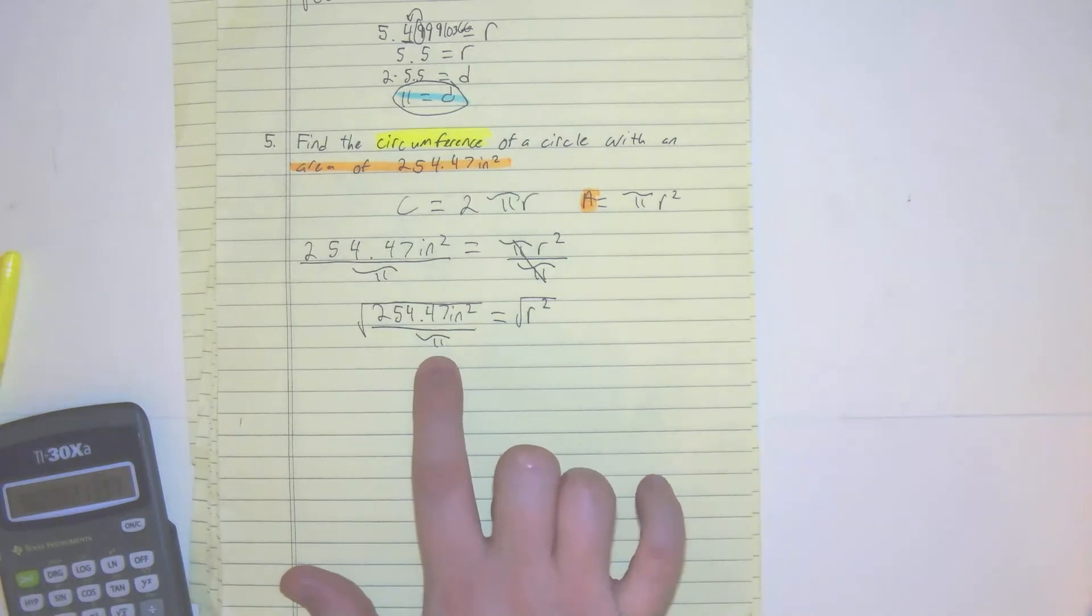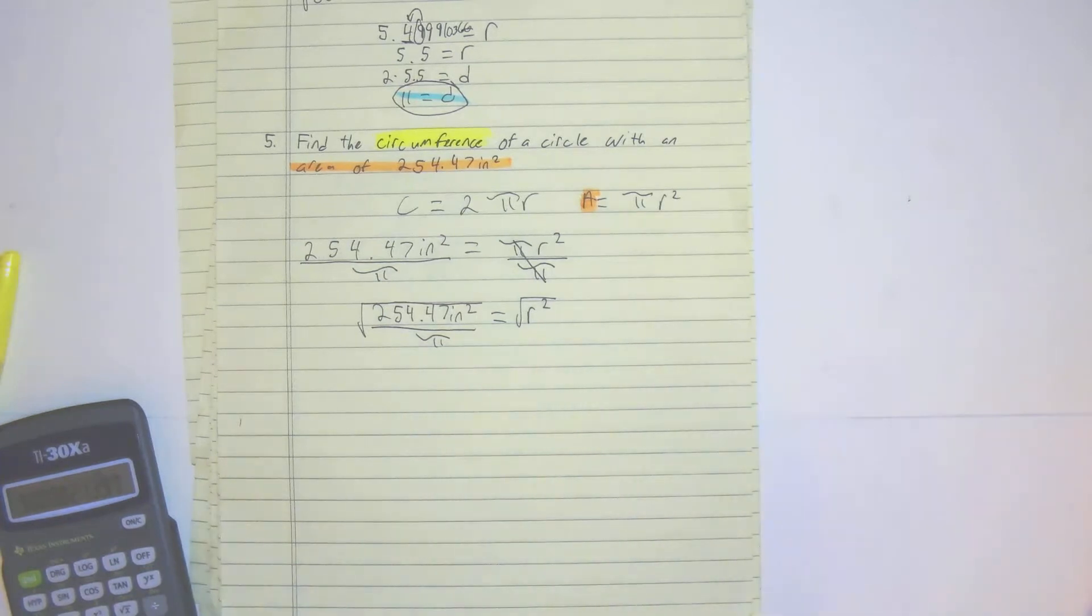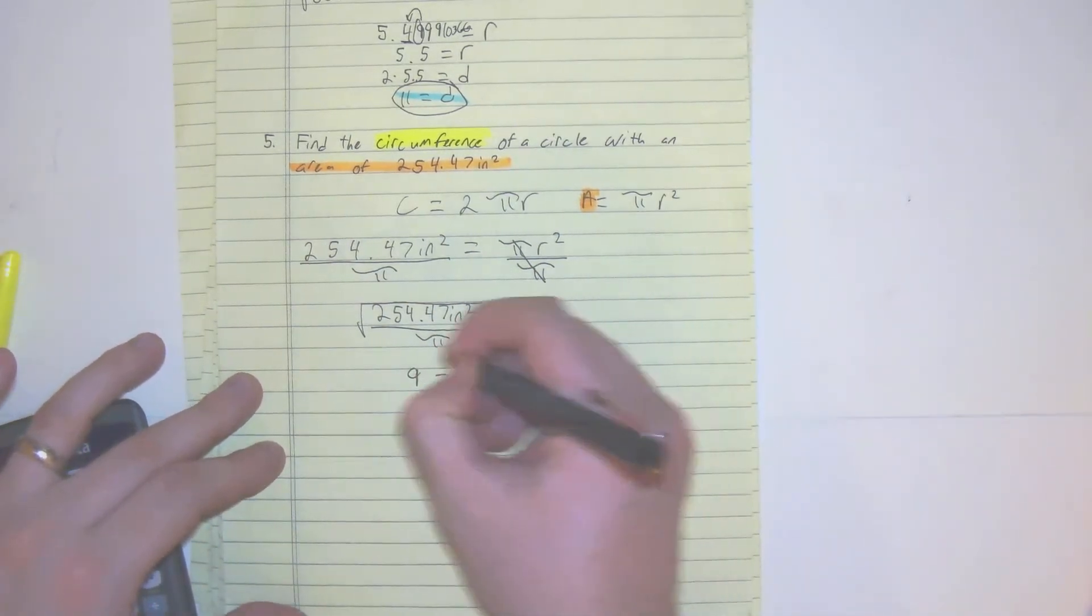The reason why we kept that in there was because on the scientific calculator, you guys may use, you can solve the answer in one fell swoop. So we have 9 is equal to the radius.